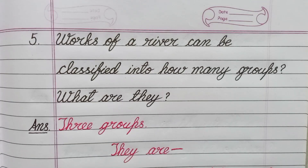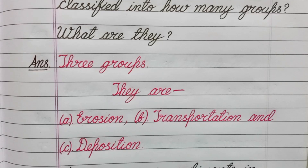Question number five: Works of a river can be classified into how many groups, and what are they? Answer: Three groups — they are erosion, transportation, and deposition.